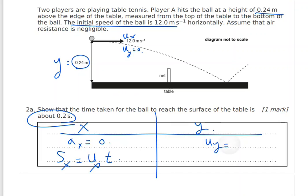For the y-direction: initial velocity uy = 0 m/s, and acceleration ay = −9.81 m/s². Using the suvat equation, since we have no initial velocity in the y-direction, we write: sy = ½ × ay × t².